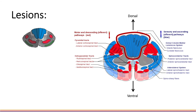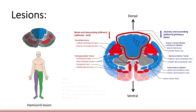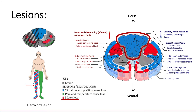A lesion of half of the spinal cord, or hemisection, will lead to ipsilateral loss of the dorsal column sensations below the level of the lesion. There will also be ipsilateral loss of motor function below the level of the lesion, and contralateral loss of the spinothalamic sensations one to two segments below the level of the lesion, with ipsilateral loss of these sensations at the level of the lesion. This is known as Brown-Séquard syndrome.